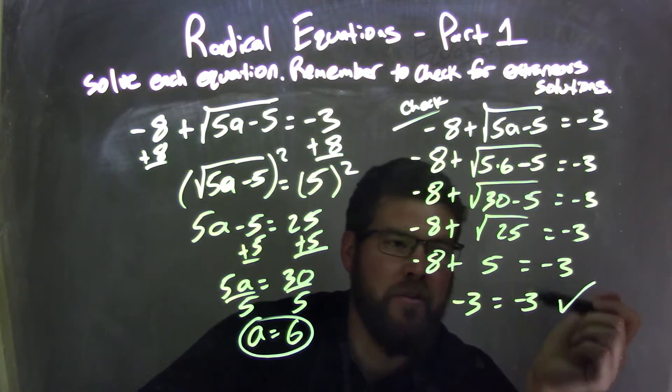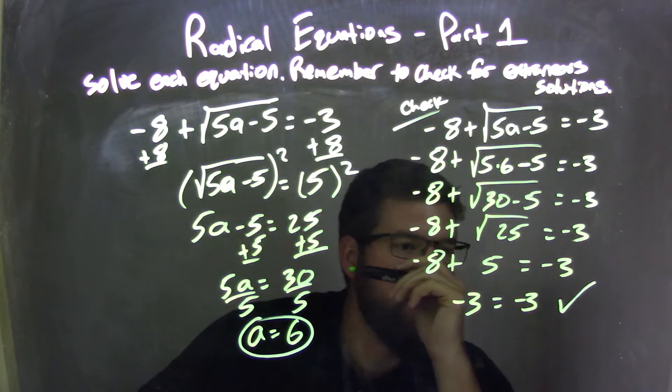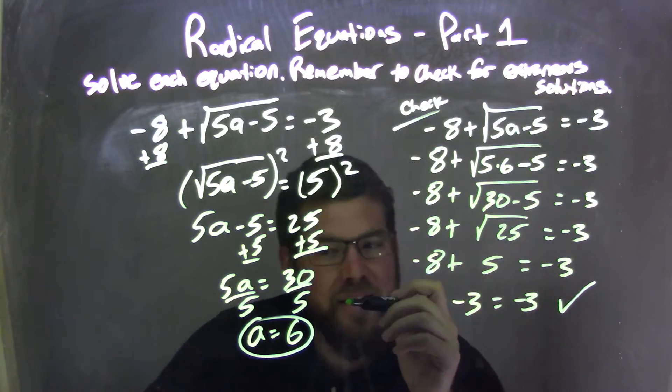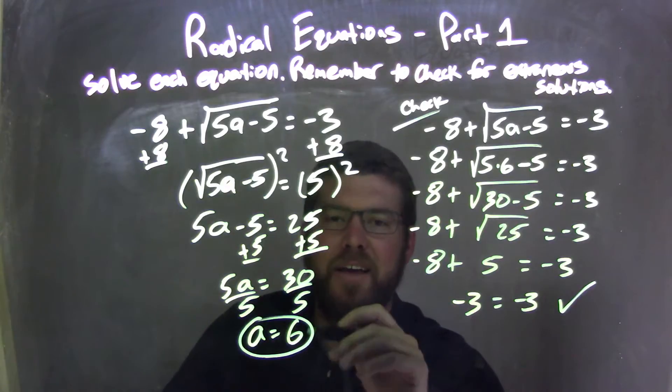That equals what was on the right side of my equation, which was negative 3. Therefore, I know that a equals 6 is correct and it's not extraneous. My final answer is a equals 6.